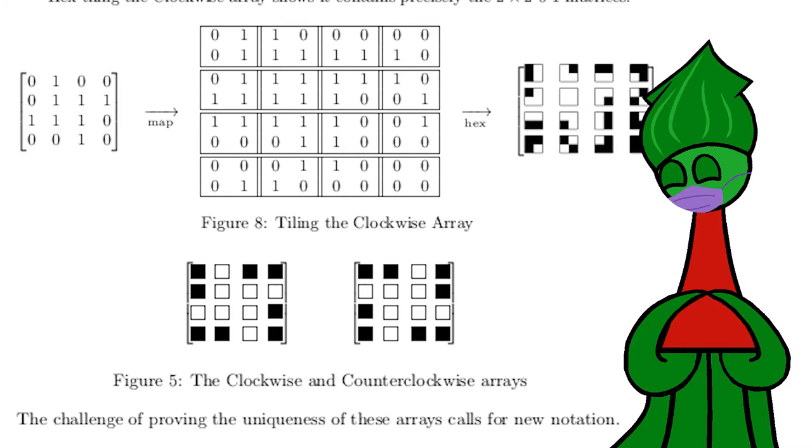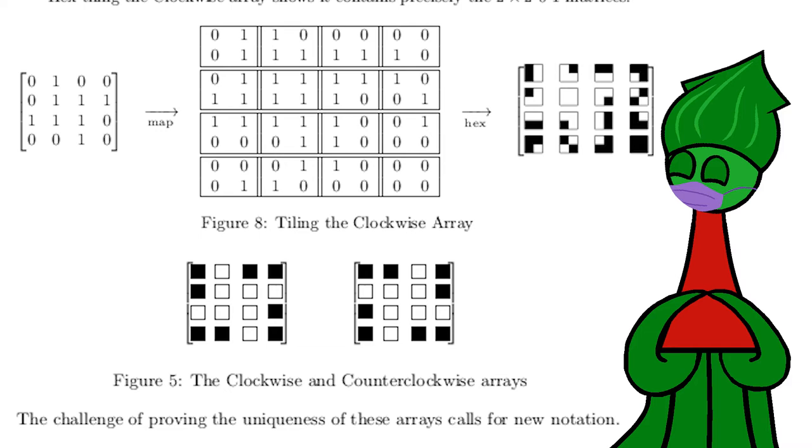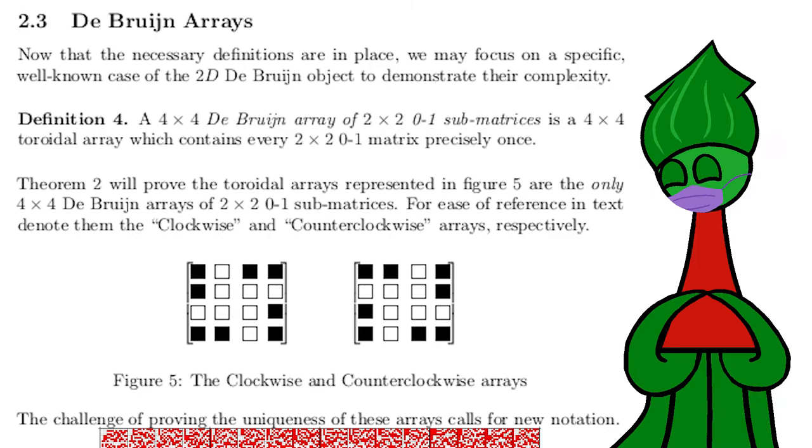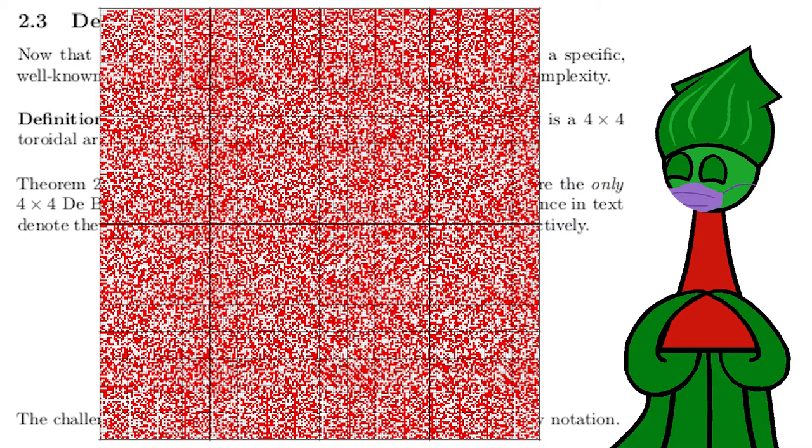These are donuts which have the Debron property in two directions at once. Every two-by-two combination of white and black exists in these donuts, precisely once for each donut. On Wikipedia, there's this cool example, with every four-by-four combination of white and red, precisely once.